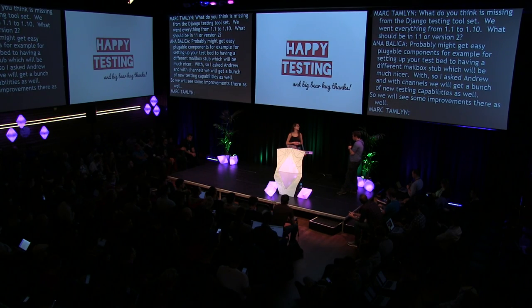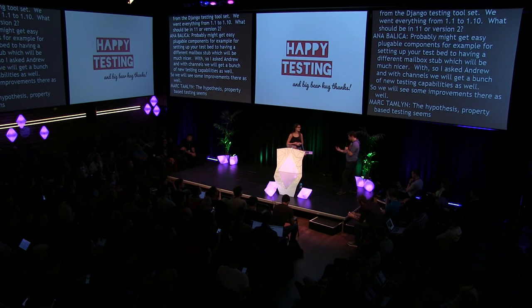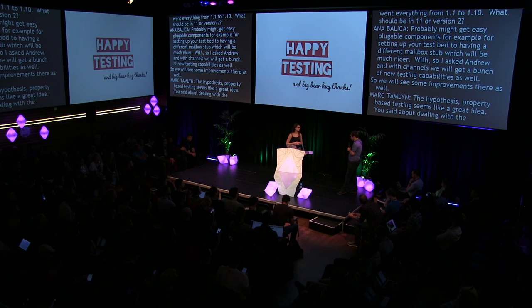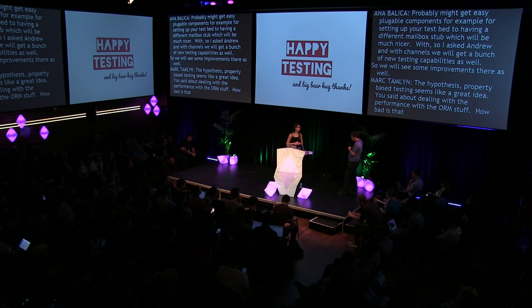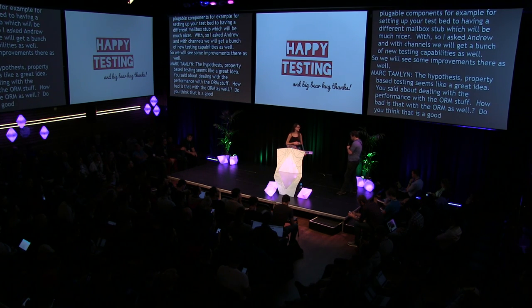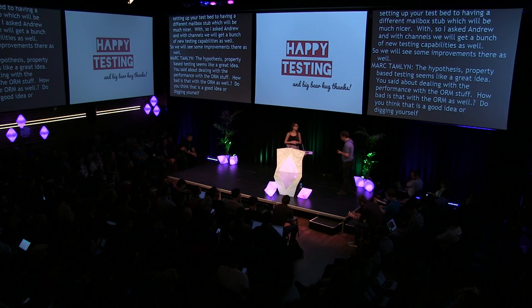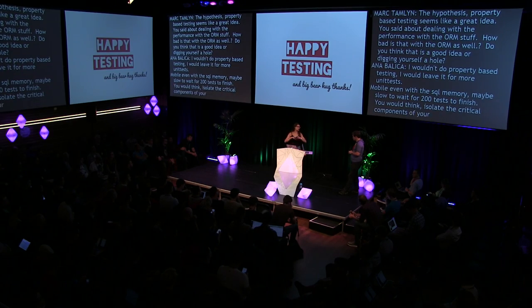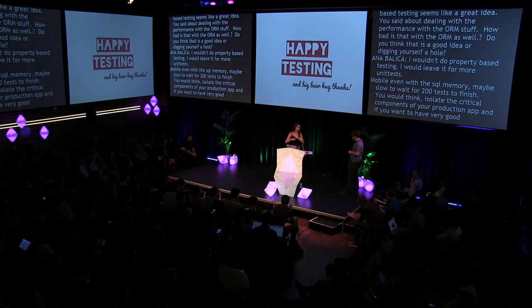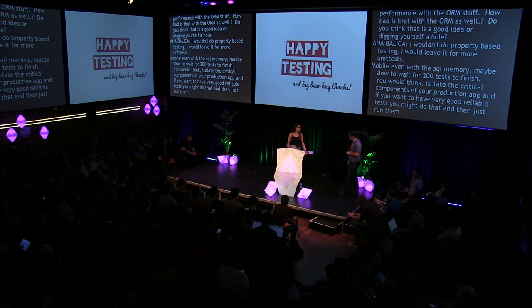On property-based testing with the ORM: I wouldn't do property-based testing hitting the database — I would leave it for more unit-tested tests. Probably even with SQLite in memory it might be too slow to wait for 200 tests to finish. You would isolate the critical components of your production app, and if you want very reliable tests, run them on CI if you're fine waiting.